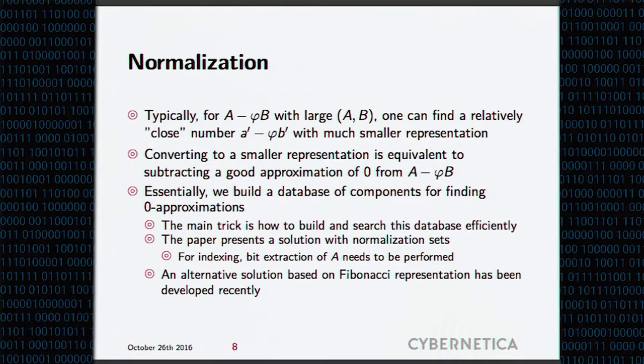So the whole problem of normalization is replaced by a problem of finding close enough representations, which is equivalent to finding good approximations of zero. Basically, you want to have your database of approximations of zero that you can then select a suitable number to add to your big representants and get a more or less equivalent close number with sufficiently small representants. The problem is, how do you build this database of approximations of zero? And even more importantly, how do you query it efficiently?